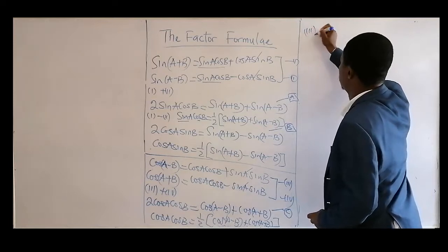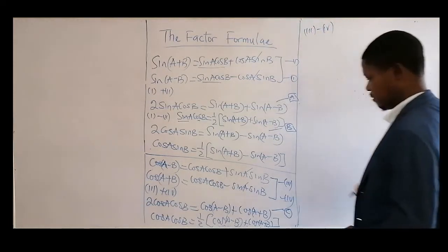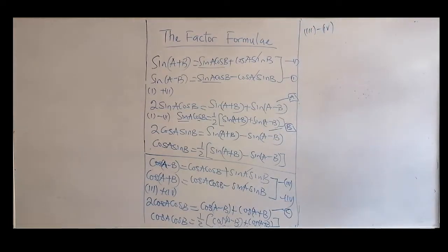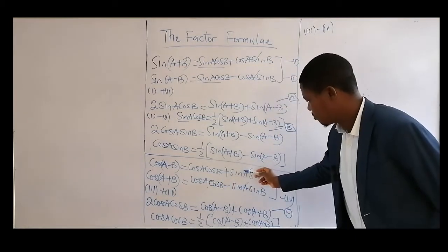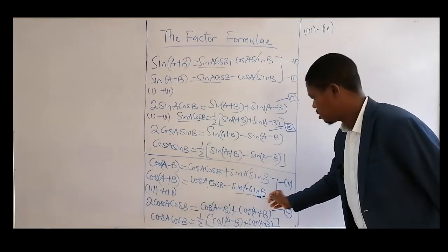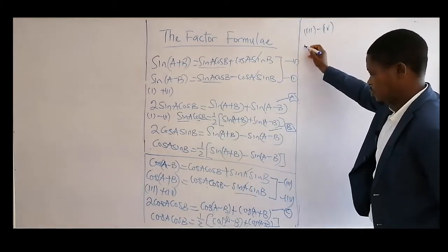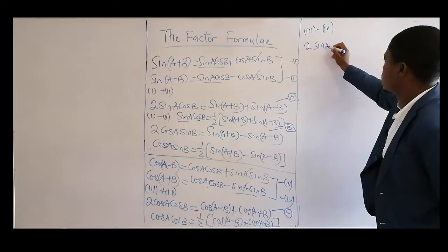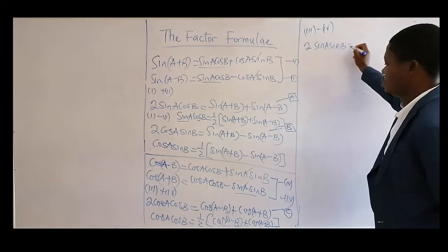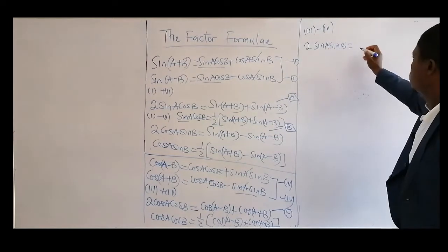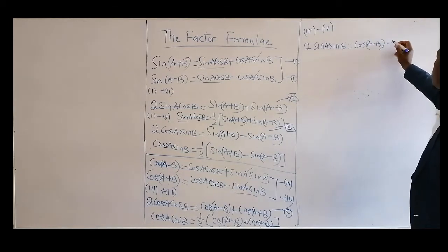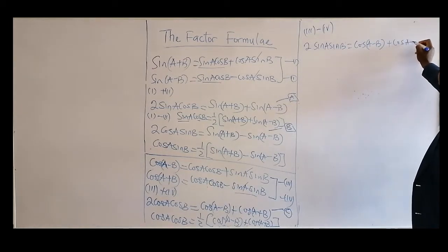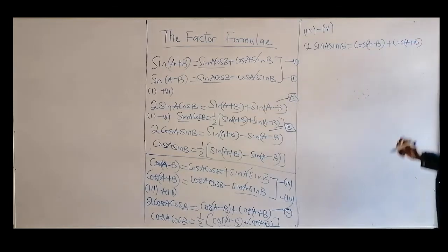Can we also subtract? Equation three minus equation four: the appropriate terms cancel, and we have 2 sine A sine B equals cos(A − B) minus cos(A + B). Call this equation D.